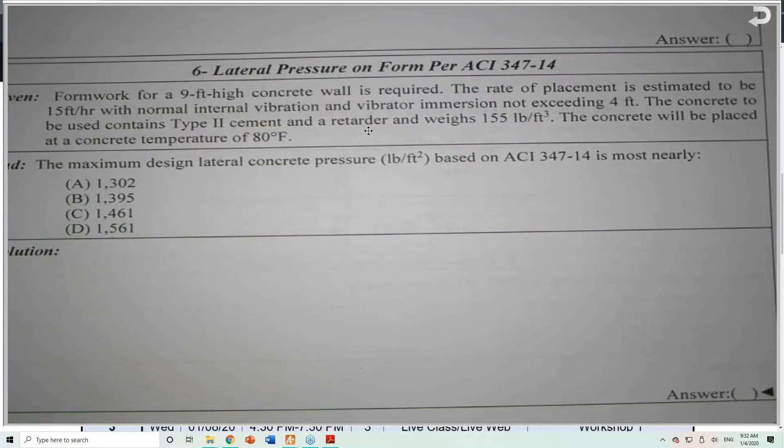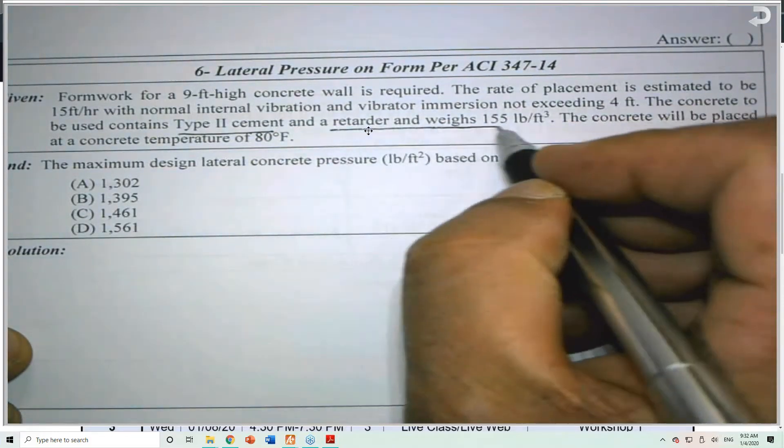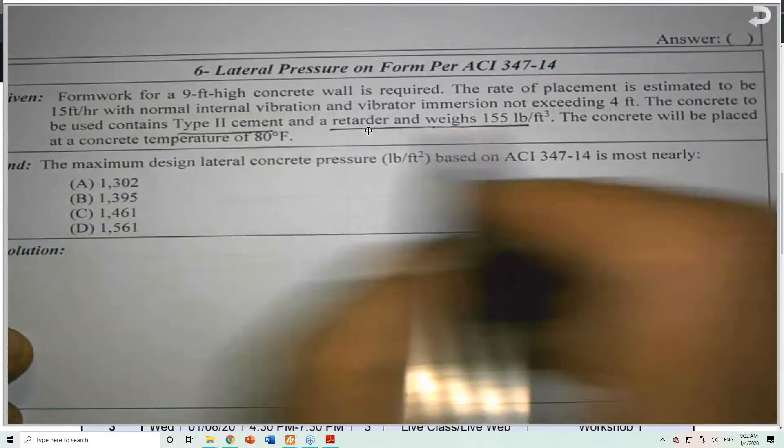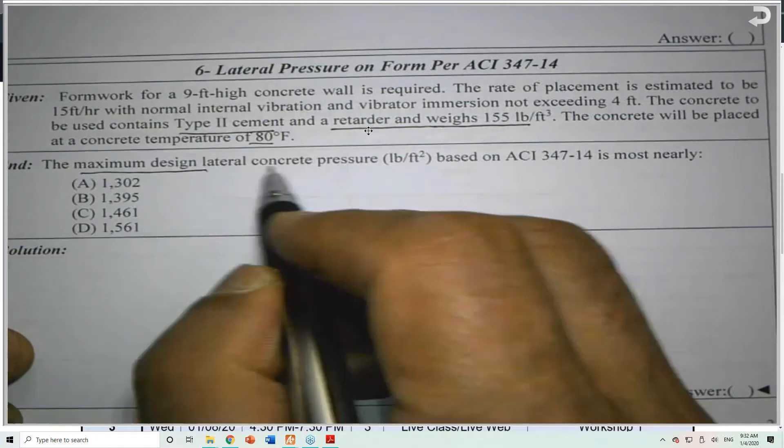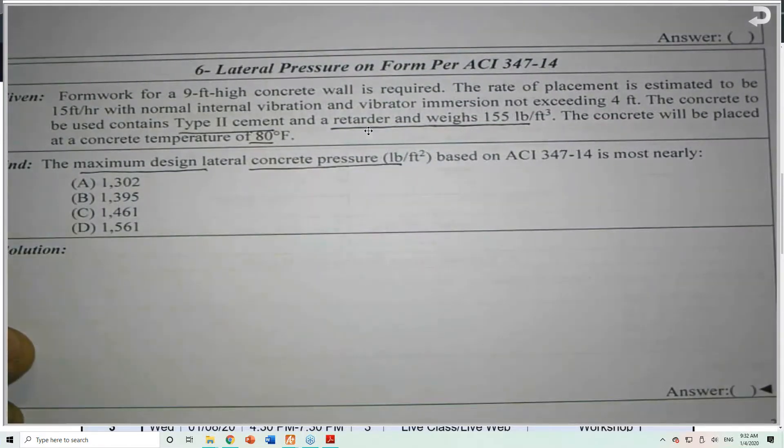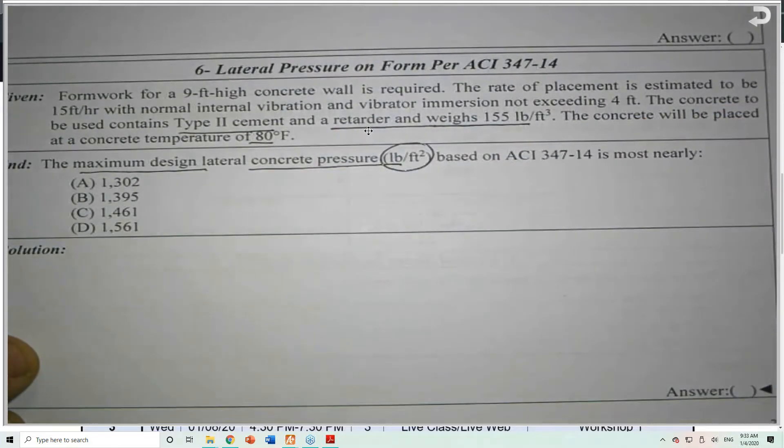Formwork for a 9-ft-high concrete wall is required. The rate of placement is estimated to be 15 feet per hour with normal internal vibration and vibrator immersion not exceeding 4 feet. The concrete is to be used content Type 2 cement and a retarder, and the unit weight is given. The concrete will be placed at a temperature of 80°F. What is the maximum design lateral force? This is pounds per square foot.